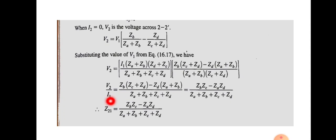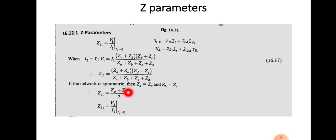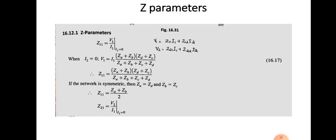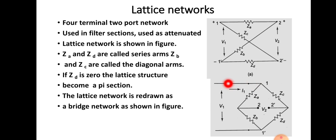Applying the symmetric condition ZA = ZD and ZC = ZB to Z21 gives Z21 = (ZB − ZA) / 2. We have now found Z11 = (ZA + ZB) / 2 and Z21 = (ZB − ZA) / 2. Next, to find Z12 and Z22, we set I1 = 0. Then Z12 = V1 / I2 and Z22 = V2 / I2 with I1 = 0. When I1 = 0, the circuit will look like the redrawn version with only the second port active.